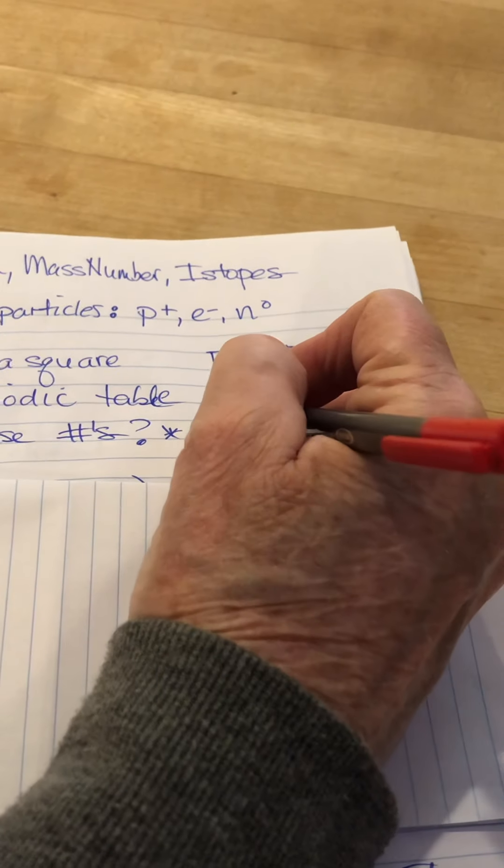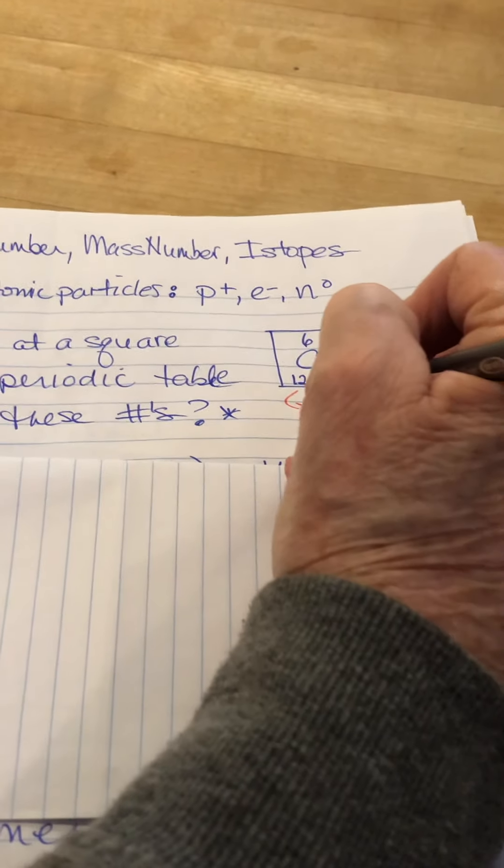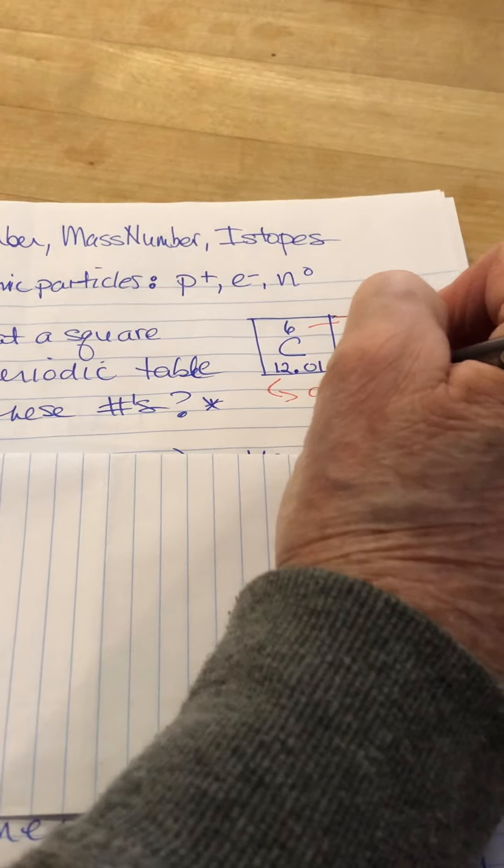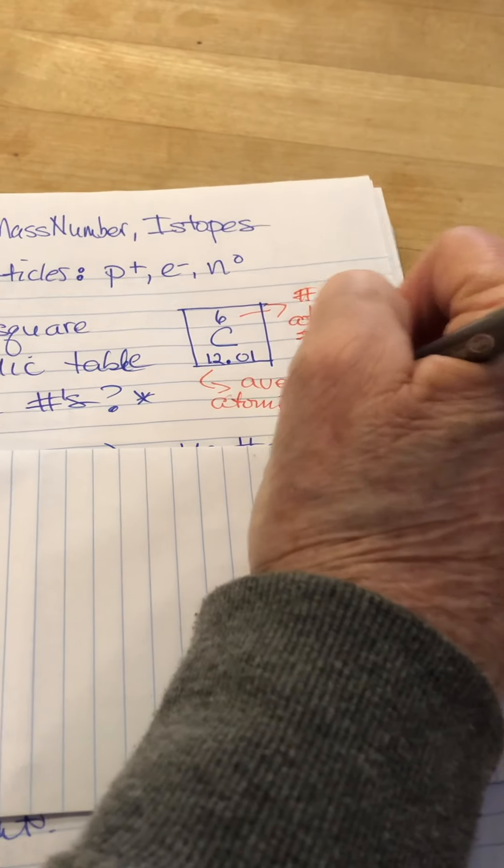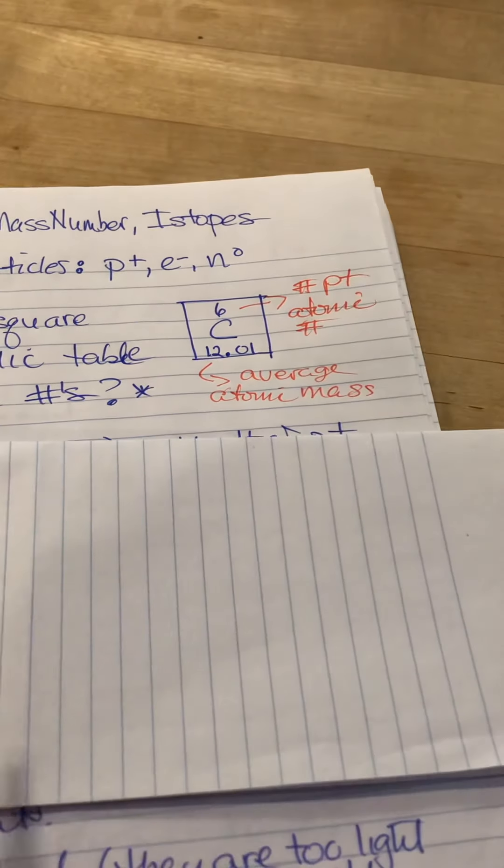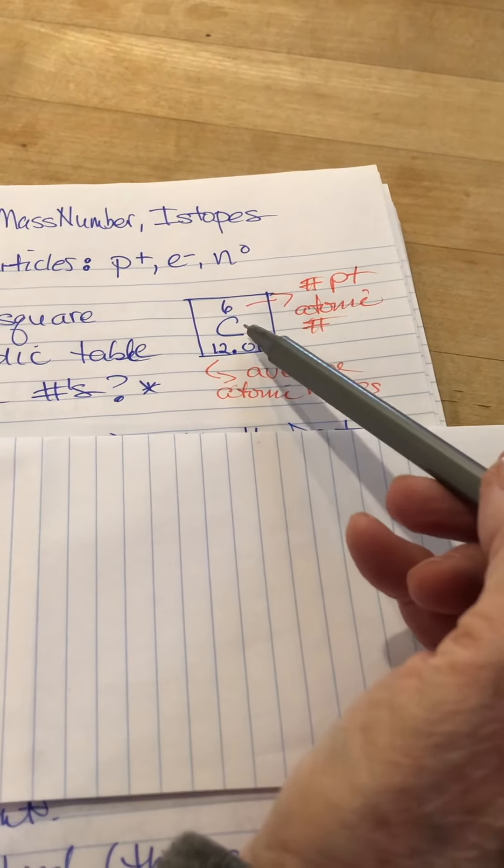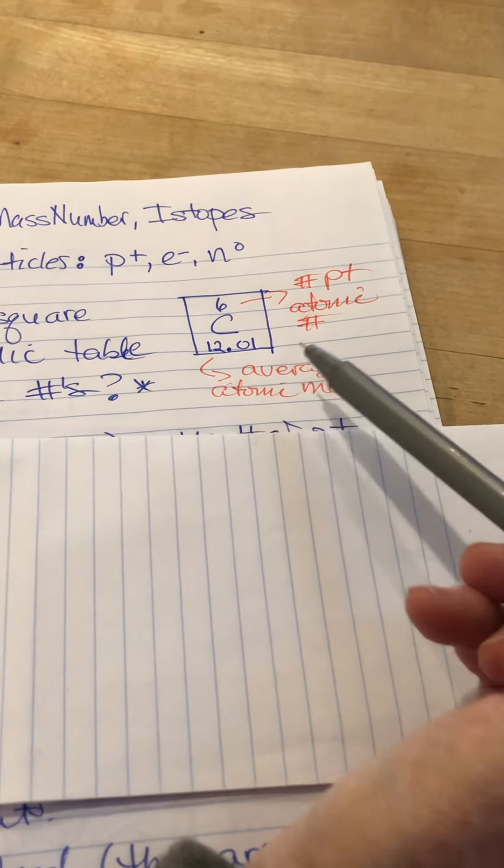This non-integer value is something called the average atomic mass, which we will get to next time. So we have the atomic number, the symbol for the element, and the average atomic mass.